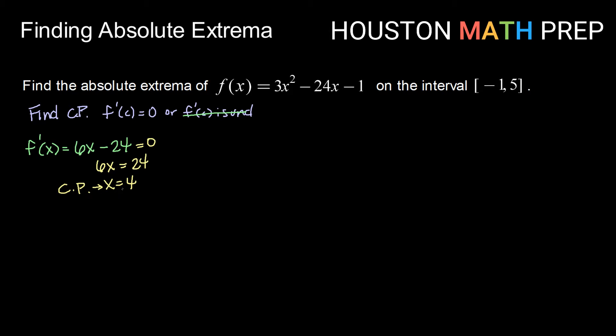Now remember here we are only interested in critical points that fall on this interval. So we need to double check if that does occur. 4 is between -1 and 5, so we will use it.